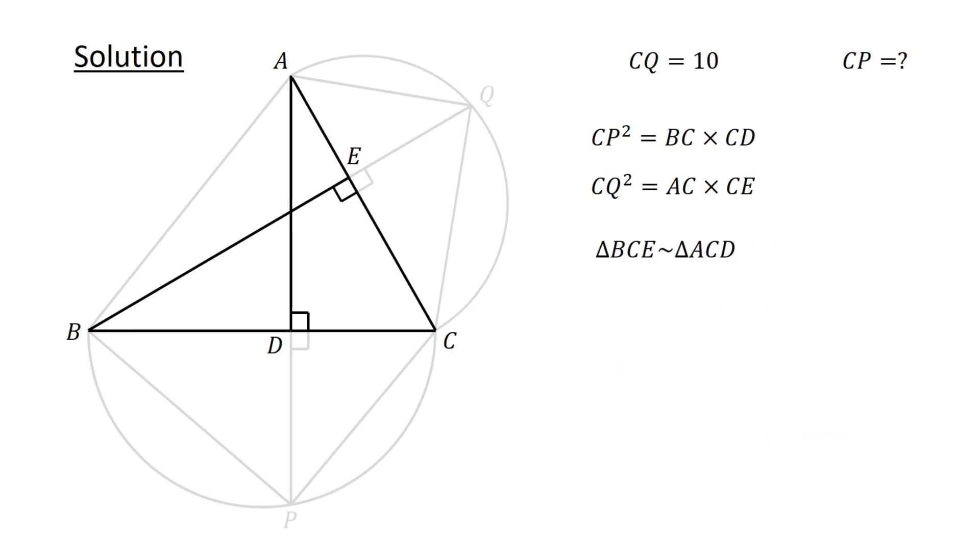Since corresponding sides of similar triangles are proportional, we have BC over AC, which is the ratio of side BC to side AC, equals CE over CD, which is the ratio of side CE to side CD. Or, after cross multiplying, BC times CD equals AC times CE.